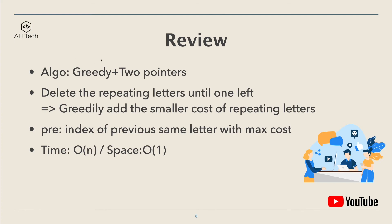To review: the algorithm to solve this question is greedy and two pointers. The main idea is that for every group of repeating letters, we delete the repeating characters until only one character is left, greedily adding the smaller cost. The pre pointer is the index pointing to the previous same letter with the maximum cost. The time complexity is linear and space complexity is constant since we're only using two pointers.